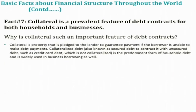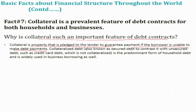Fact seven: collateral is a prevalent feature of debt contracts for both households and businesses. What is collateral? Collateral is a property pledged to the lender to guarantee payment if the borrower is unable to make debt payments. Collateralized debt — also known as secured debt, in contrast to unsecured debt such as credit card debt — is the predominant form of household debt and is widely used in business borrowing. Examples include mortgages, housing loans, and vehicle loans. Why is collateral such an important feature of debt contracts?